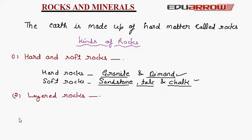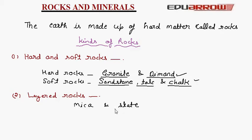The second type of rock is layered rocks. Examples of layered rocks are mica and slate. Slate is smooth and black in color, and mica is used for electrical gadgets like iron.